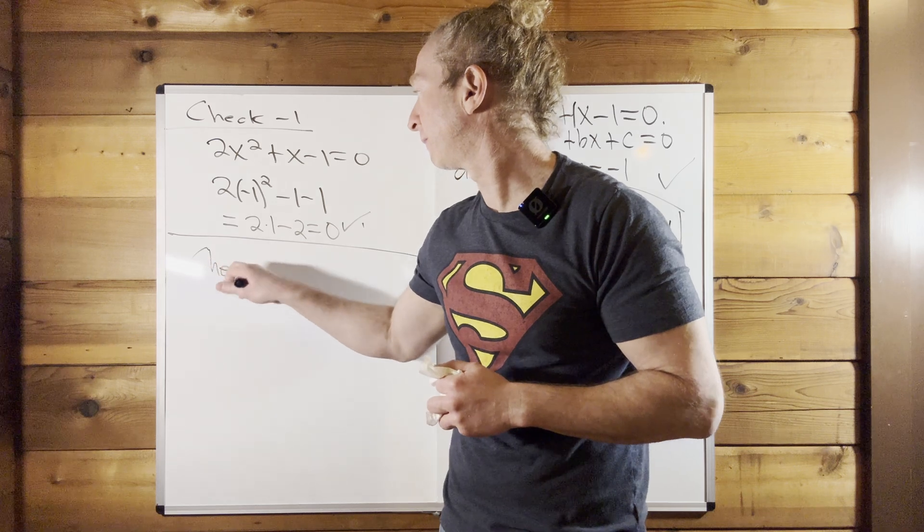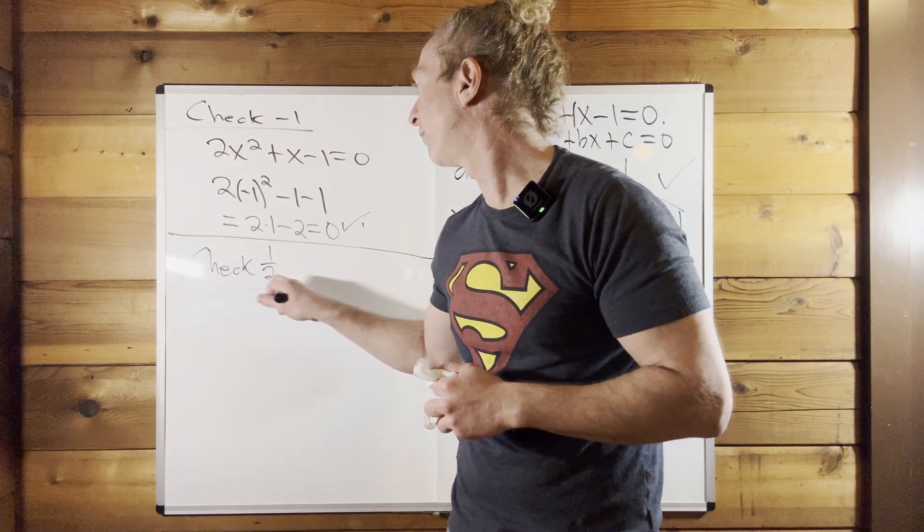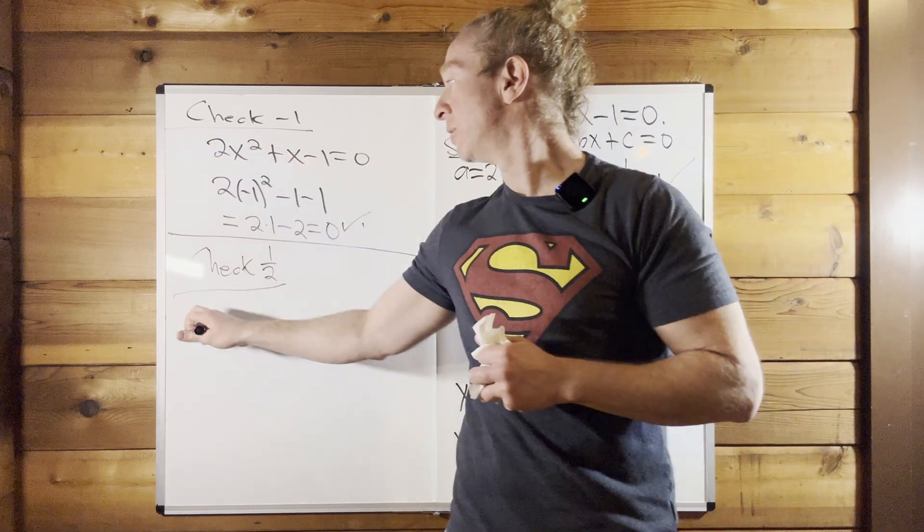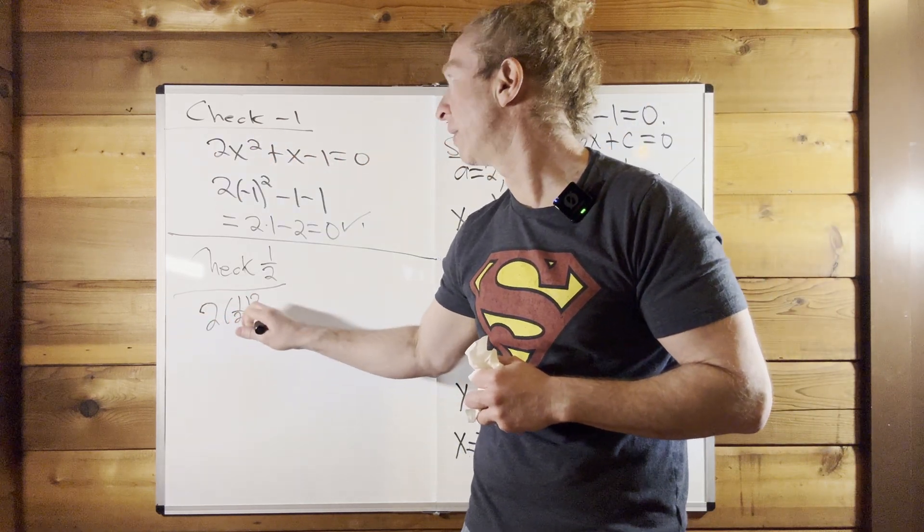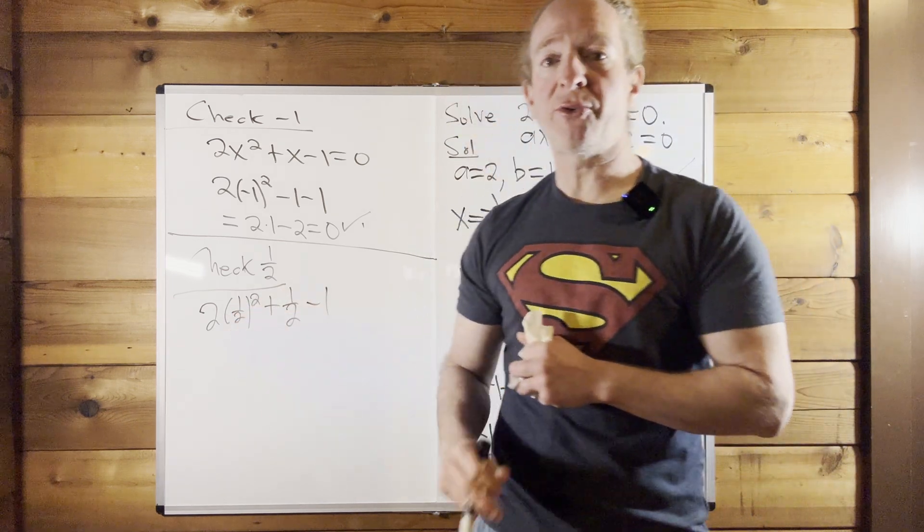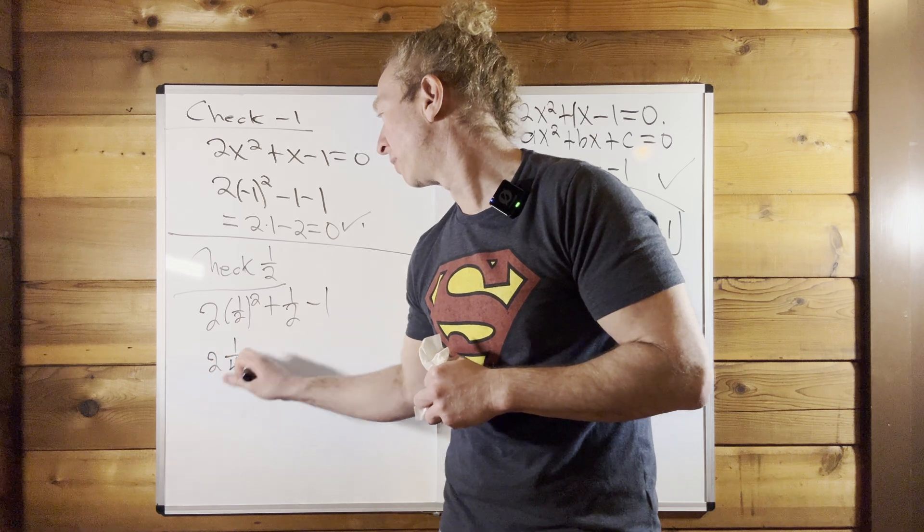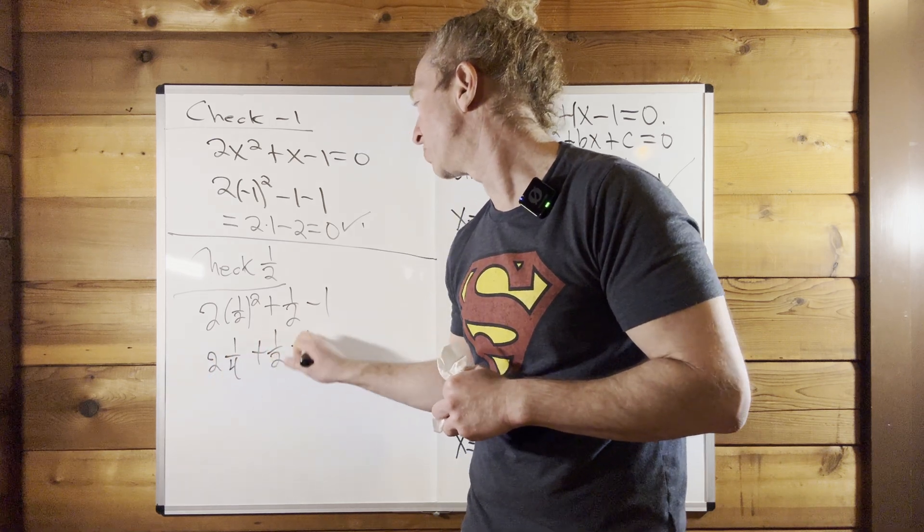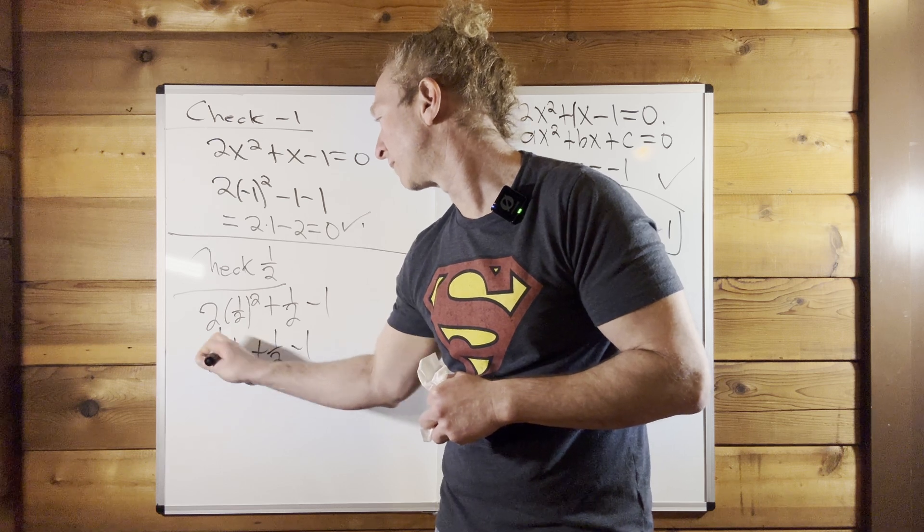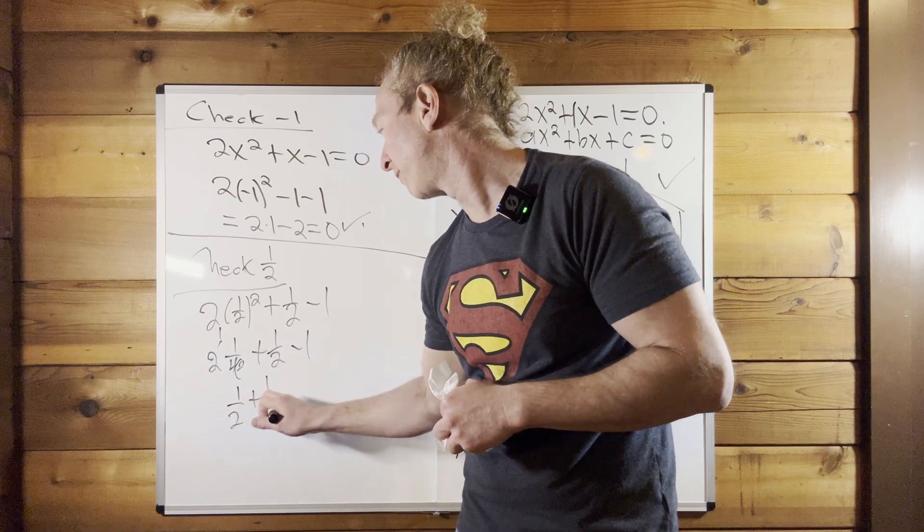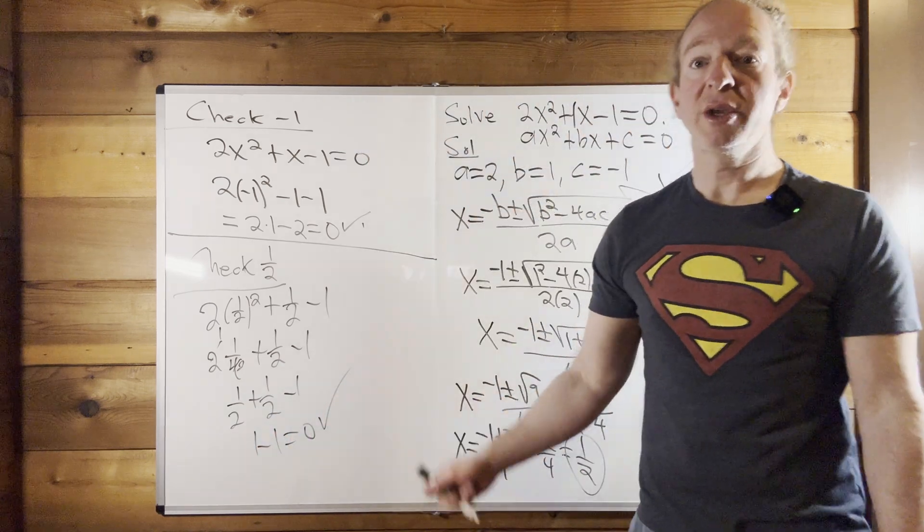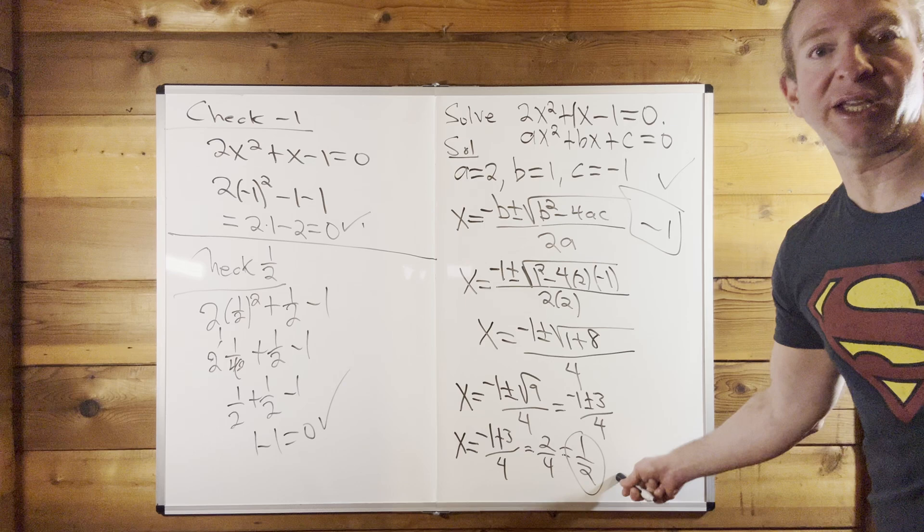So check 1 half. So when we check 1 half, again, we take 1 half and we plug it into this equation here. So it's 2 times 1 half squared plus 1 half minus 1. Well, 1 half squared is 1 fourth. So this is 2 times 1 fourth plus 1 half minus 1. 2 times 1 fourth, that's 1 half, right? Because 2 goes into 4 twice. So this is 1 half plus 1 half minus 1. So it's 1 minus 1, which is 0. So it checks. No issues. So 1 half is indeed one of our answers.